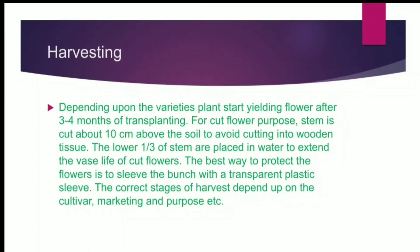Harvesting. Depending upon the variety, plants start yielding flowers after 3 to 4 months of transplanting. For cut flower purposes, the stem is cut about 10 cm above the soil to avoid cutting into woody tissue. The lower one third of the stem is placed in water to extend the vase life of cut flowers. The best way to protect flowers is to sleeve the bunch with a transparent plastic sleeve. The correct stage of harvest depends upon the cultivar, marketing, and purpose.